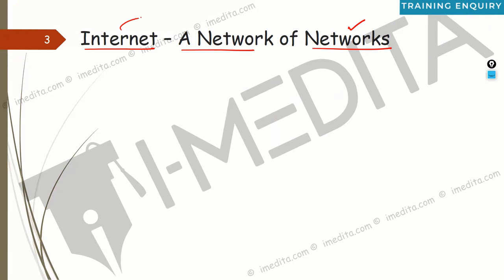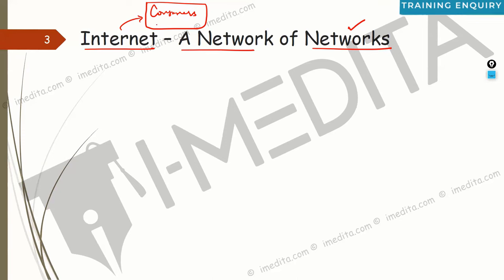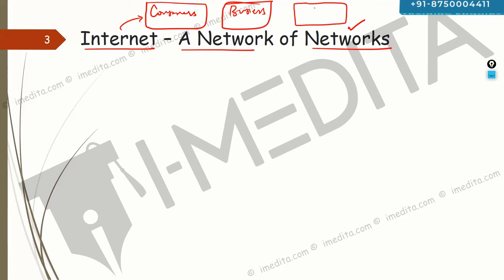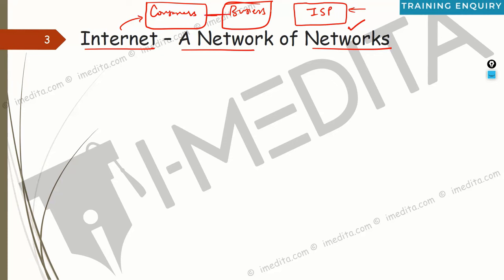The building blocks of internet are: consumers like you and me streaming YouTube or songs; businesses like Google hosting content on servers in data centers; and internet service providers who provide the connection in between. These are the core parts that make internet possible.